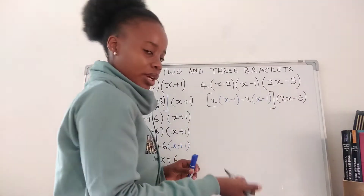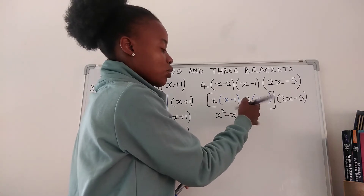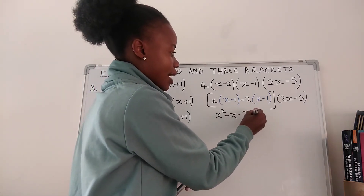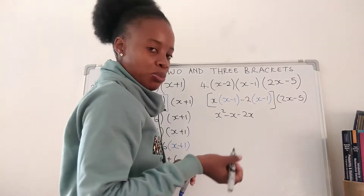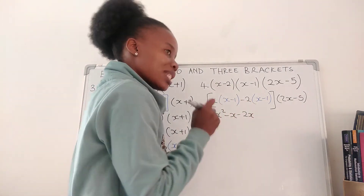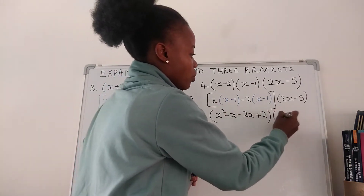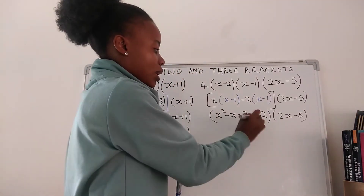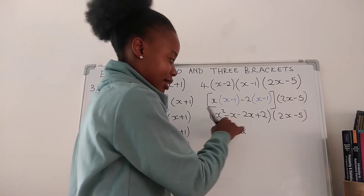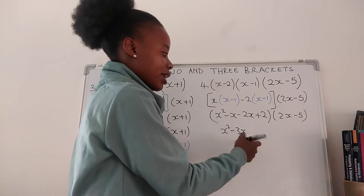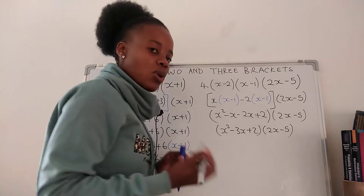We remove brackets: x squared, x times negative 1 is minus x, negative 2 times x is negative 2x, negative 2 times negative 1 — we are multiplying a negative and a negative, so we get a positive — negative 2 times negative 1 is positive 2. We still have (2x − 5) on this side. After collecting like terms we have x squared minus 3x plus 2, times (2x − 5).